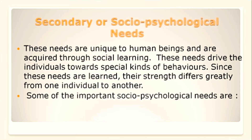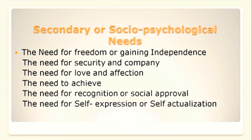Secondary or socio-psychological needs are unique to human beings and are acquired through social learning. These needs drive individuals towards special kinds of behaviour. Since these needs are learnt, their strength differs greatly from one individual to another. Some important socio-psychological needs are: need for freedom or gaining independence, need for security, need for company, need for love and affection, need to achieve, need for recognition or social approval, and need for self-expression or self-actualization.